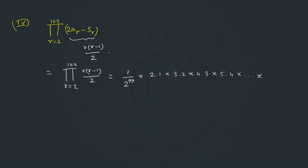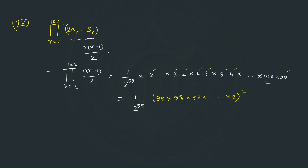In this expanded product, the values 2, 3, 4, ..., 99 each appear exactly twice, while 1 and 100 appear once each. So the product equals (1/2⁹⁹) × (99!)² × 100. The full expression to evaluate is 2⁹⁷ × ₁₉₈C₉₉ × (1/2⁹⁹) × (99!)² × 100.